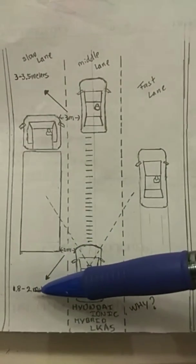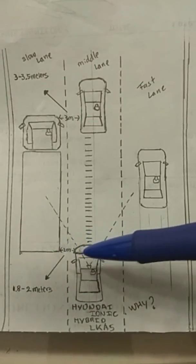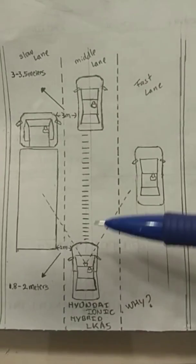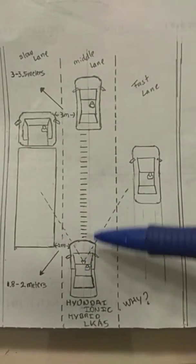And the distance between the truck itself to my car is almost near, it's about 1.8 to 2 meters away only. I don't understand why the car is keeping this position rather than the center.